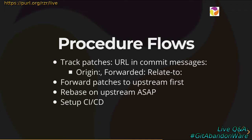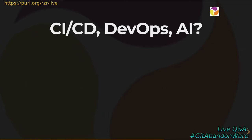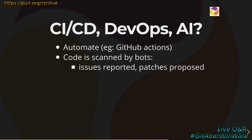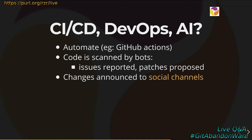We also made effort to set up continuous integration and in some cases continuous delivery — this DevOps way of working. Since some repos are on GitHub, we are automating using GitHub Actions. Code is public so it can be scanned by anyone or even bots. Some issues are reported automatically, and some component updates are proposed by programs. And when we make any change, we try to notify as many people as possible and get feedback. We share to social channels — the Fediverse Mastodon network — and we use a bot to push to Twitter as well.